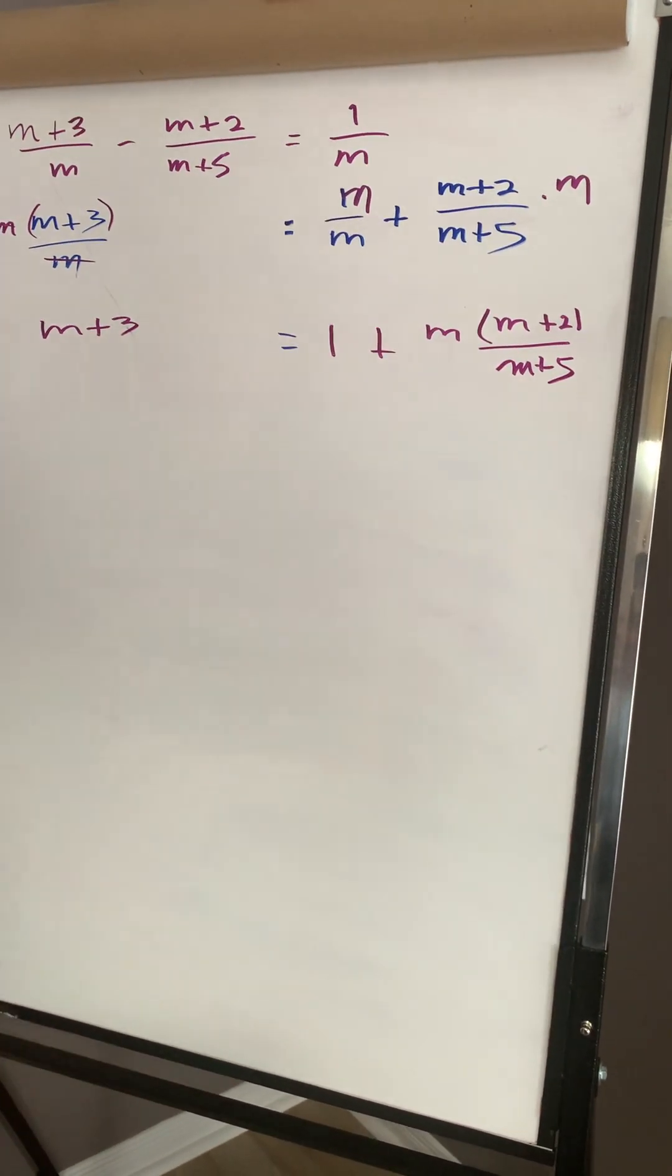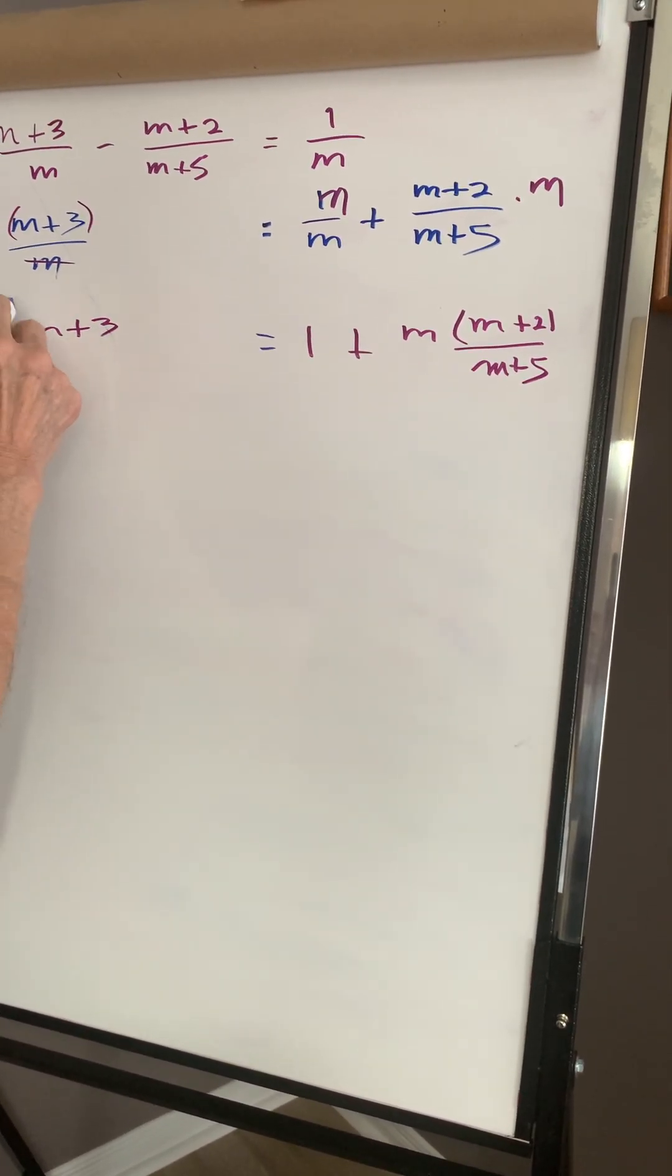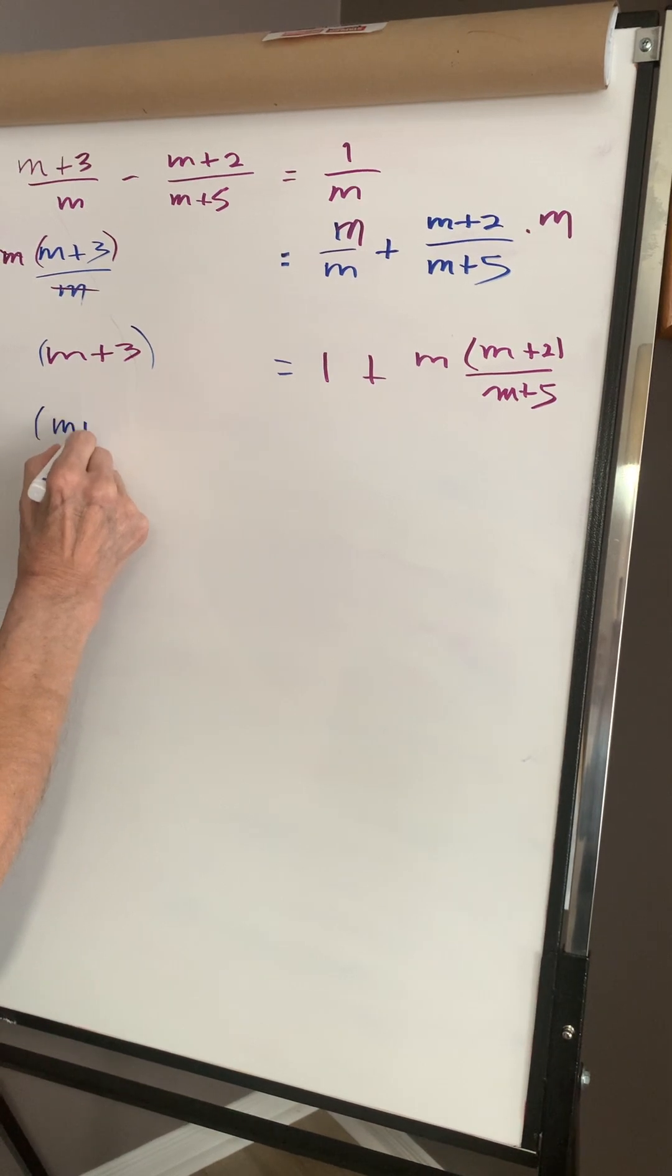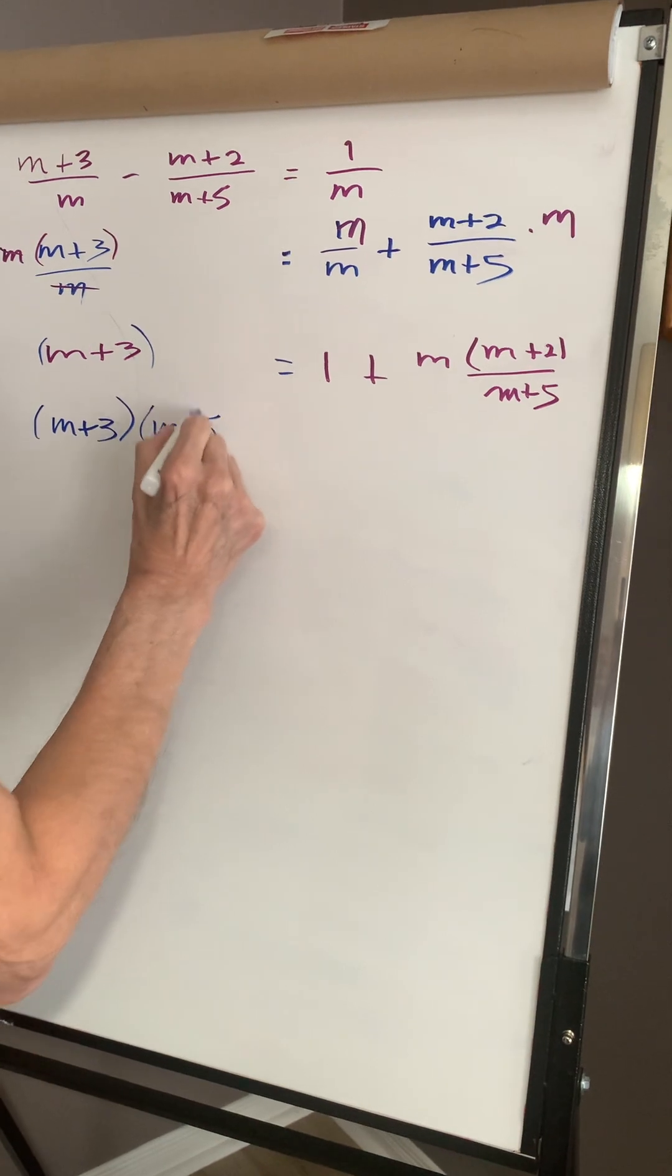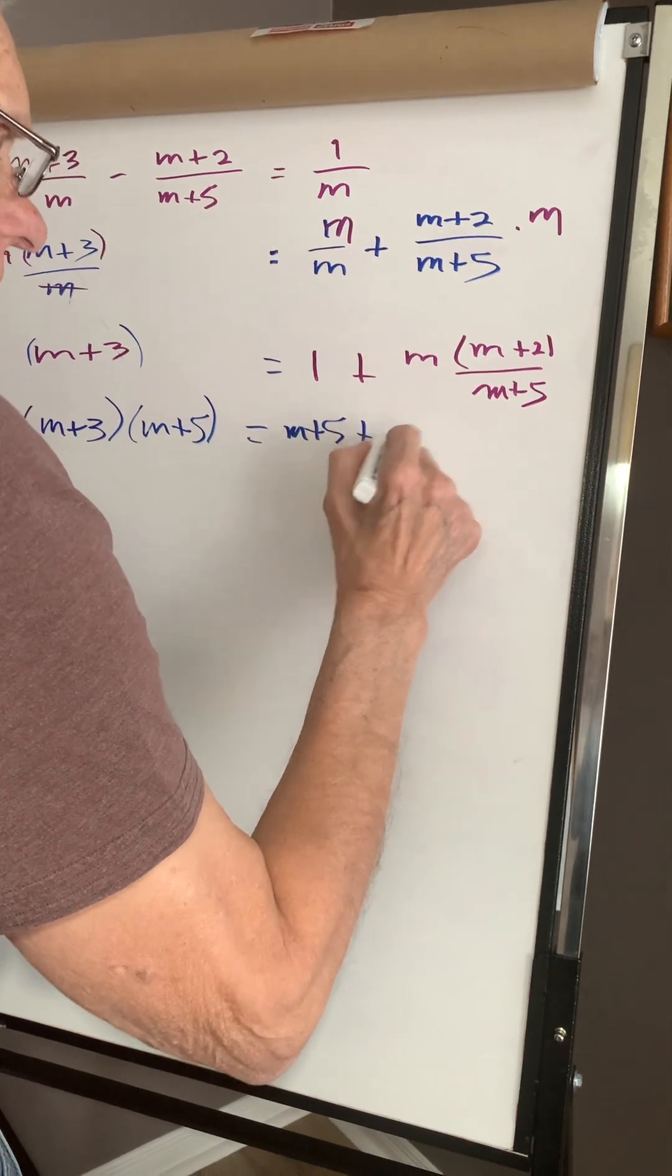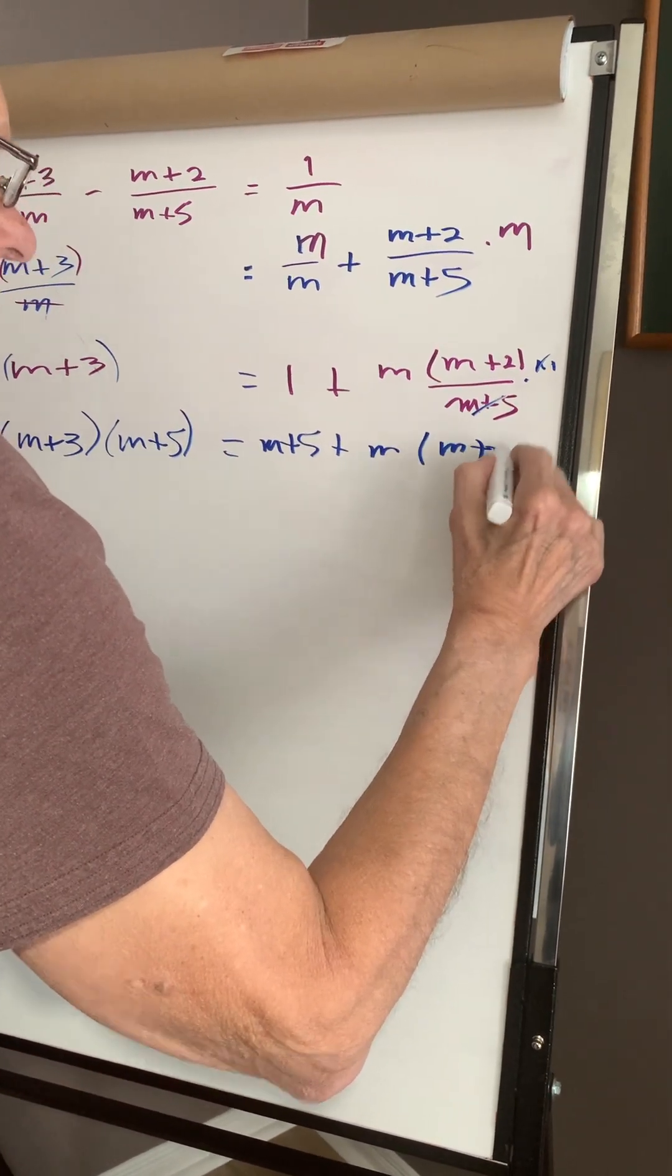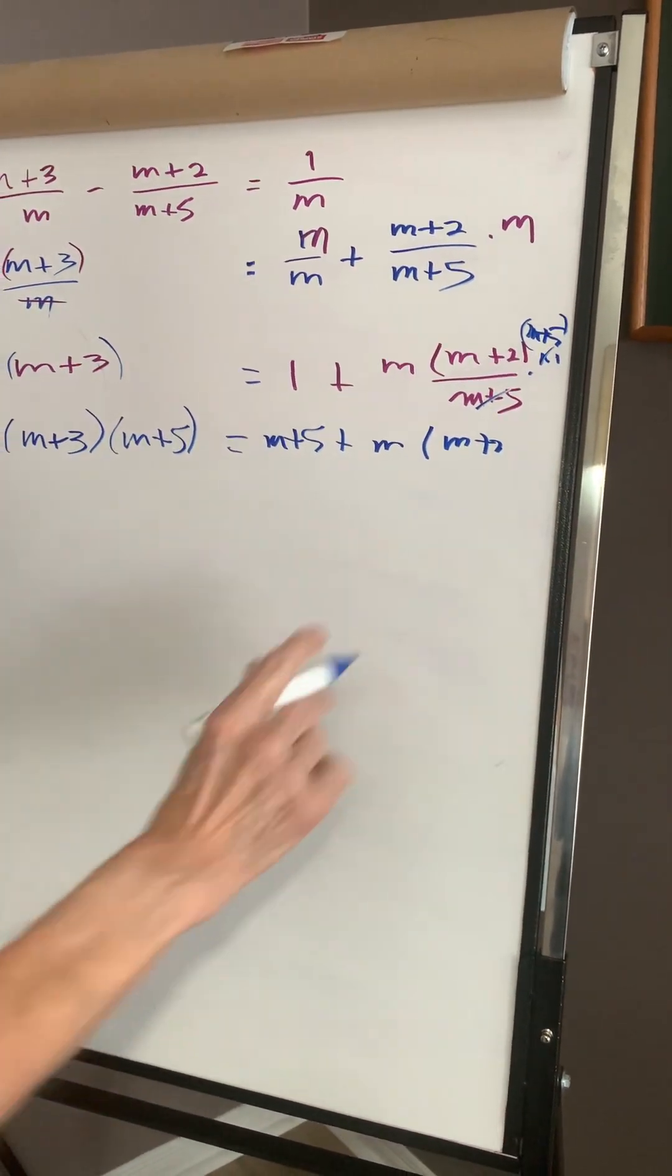Get rid of this, multiply this, we'll put it together. We'll multiply m plus five with this, so I'll have m plus three and m plus five equals one times m plus five, plus m plus five. Over here we'll cancel this, I'm left with m and m plus two. This is like an m plus five. That goes into that.